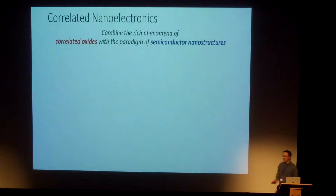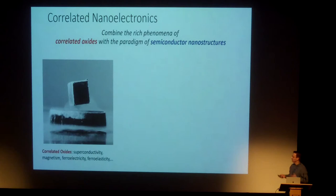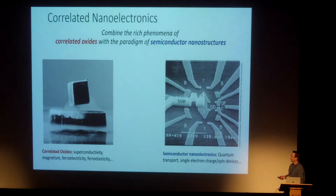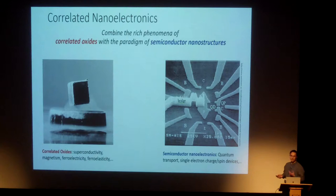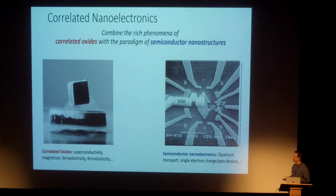It's at the intersection of two fairly well-established fields. One is the field of strongly correlated materials that have interesting properties but are generally three-dimensional bulk systems. On the other side is the field of semiconductor heterostructures and nanostructures, where dimensional reduction has taken us to the single spin or charge limit, with enormous sensitivity and the prospect of quantum information processing.